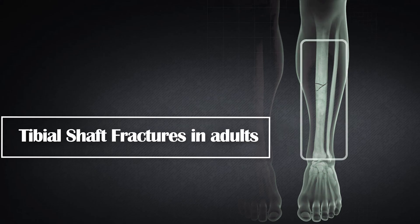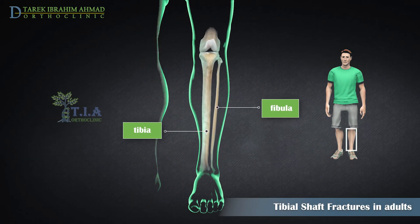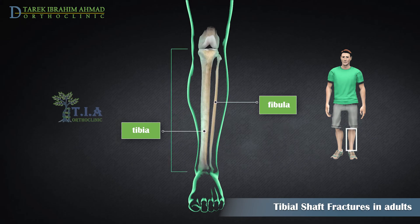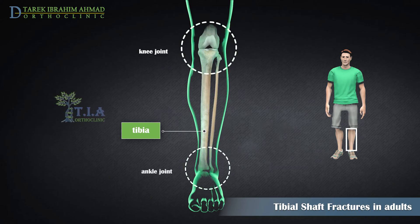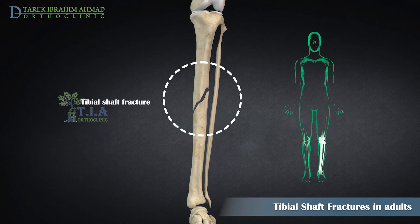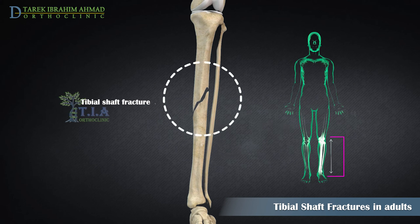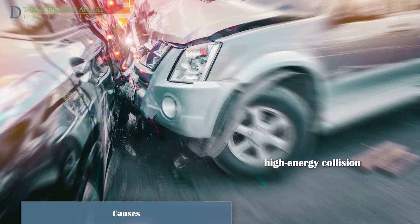Tibial shaft fractures in adults. The lower leg is made up of two bones: the tibia and fibula. The tibia is the larger of the two bones — it supports most of your weight and is an important part of both the knee joint and ankle joint. Tibial shaft fractures are the most common long bone fracture. In the event of a tibia fracture, the fibula is often broken as well.